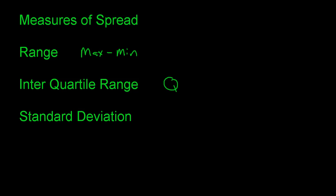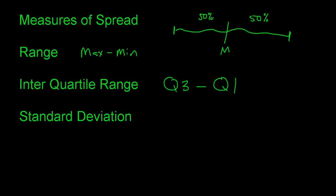The interquartile range is Q3 minus Q1. The median cuts your data in half — 50% below, 50% above. The first quartile cuts the bottom half, putting 25% below it, and the third quartile splits the top half. Together, quartiles and the median break your data into 25% chunks. The IQR represents the spread of the middle 50% of your data.